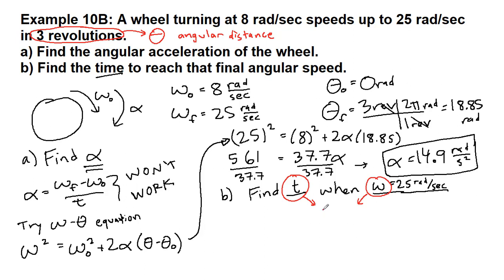That's going to be the omega T equation. It's going to look very similar to the VT equation from chapter 2. So omega final equals omega initial plus alpha times time. So we have 25 equals 8 plus 14.9 T. So we subtract 8 from both sides.